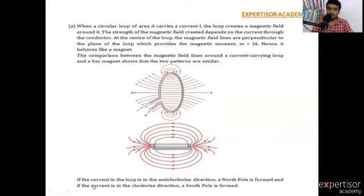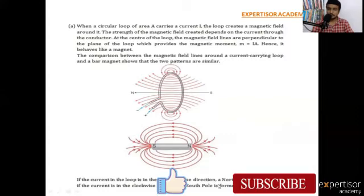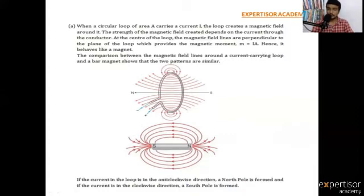If the current in the loop is in the anticlockwise direction, a north pole is formed. If the current is in the clockwise direction, that is a south pole. So: whenever there is a south pole, the current direction is clockwise; whenever there is a north pole, the current direction is anticlockwise.